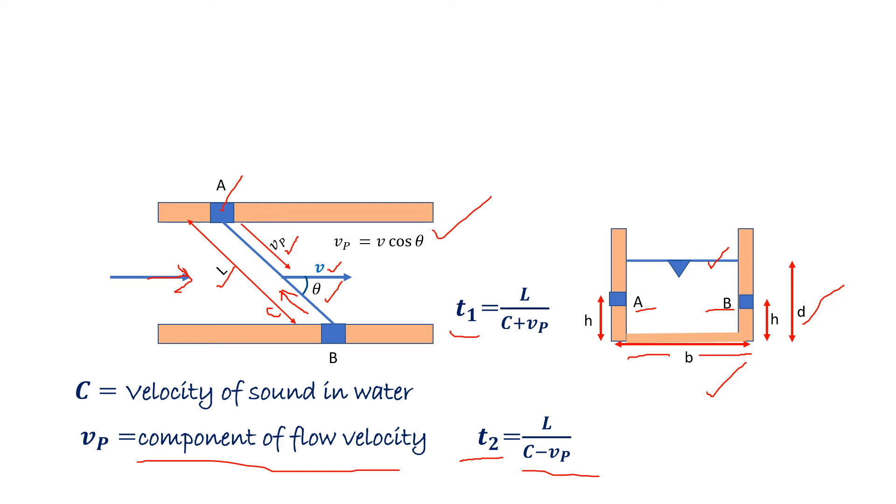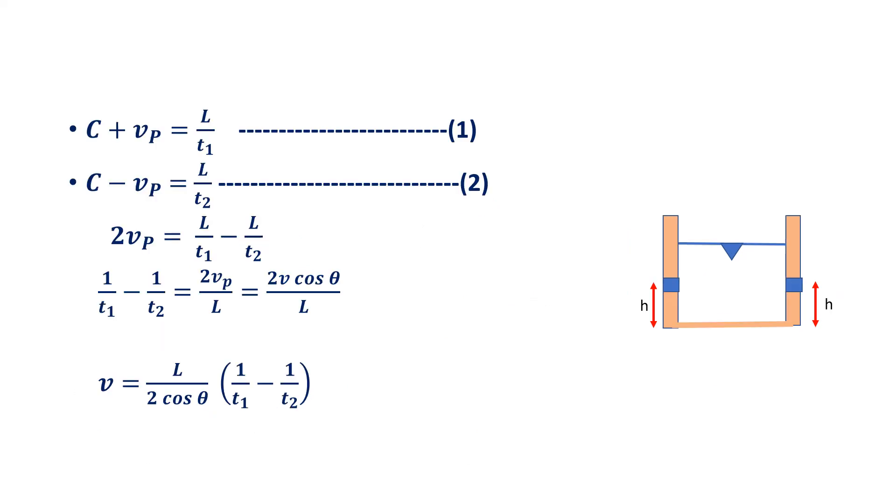Next what we are doing is we are writing C plus Vp as L divided by T1 and C minus Vp as L divided by T2.